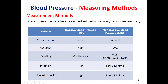Non-invasive blood pressure can be a single reading or a continuous reading. Single reading is typical in the oscillometric method, used in vital signs and patient monitors. Continuous reading is available in CNAP technology — the acronym for Continuous Non-invasive Arterial Pressure. However, invasive blood pressure has drawbacks including high infection risk and a high possibility of electrical shock, whereas non-invasive blood pressure is safer regarding both infection risk and electrical shock.